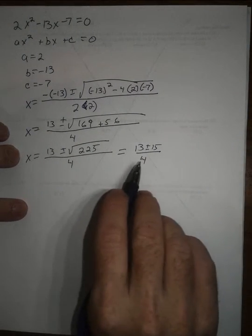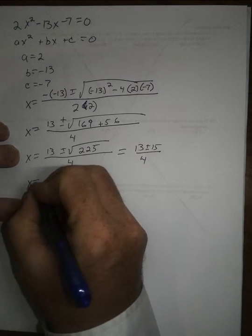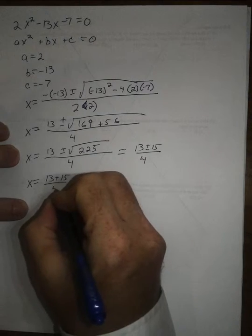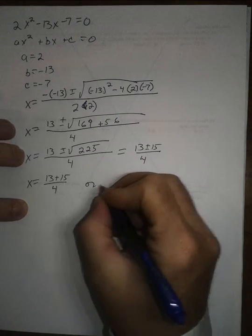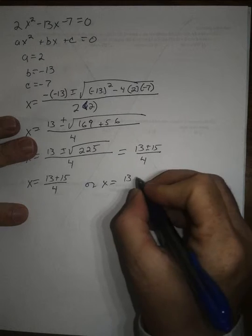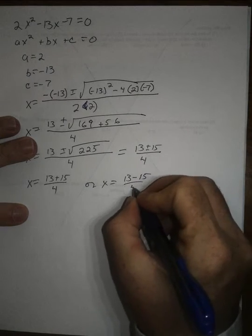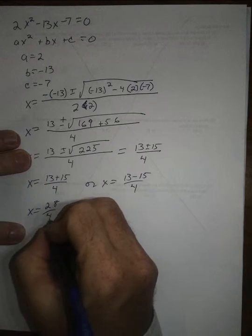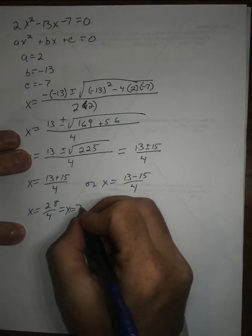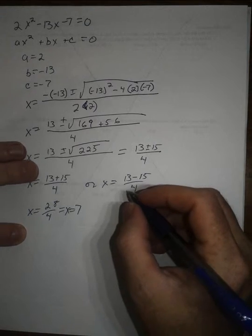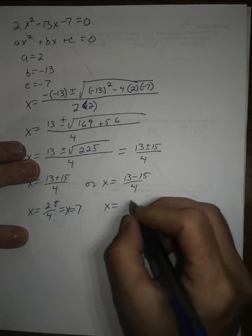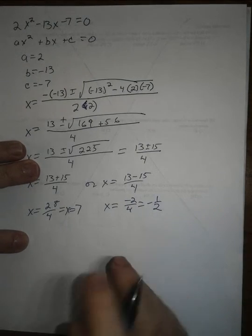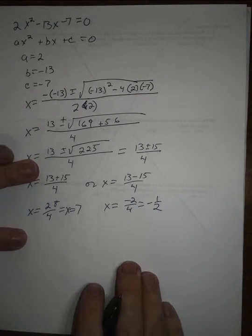And so now I'm going to write the two solutions that this gives me as x equals 13 plus 15 over 4, or x equals 13 minus 15 over 4. That simplifies to x equals 28 over 4, x equals, sorry, 7. And then this becomes x equals negative 2 over 4, which simplifies to negative 1 half. And those are the answers that we saw in the previous video.